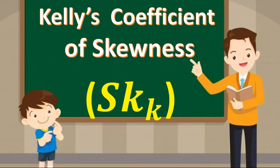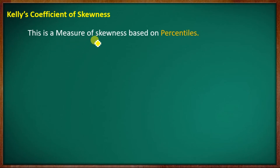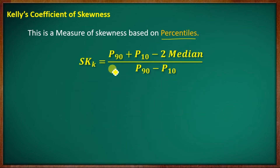In this discussion, the topic is Kelly Coefficient of Skewness. What is Kelly Coefficient of Skewness? This is measured skewness based on percentile. If we have percentile-based skewness, the formula is: P90 plus P10 minus 2 times median, all divided by P90 minus P10.